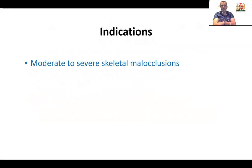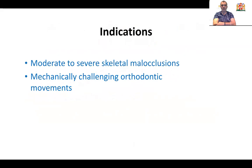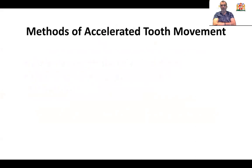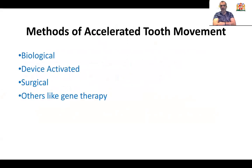What are the indications for acceleration of tooth movements? It's mainly indicated to treat moderate to severe skeletal malocclusion, and also to treat mechanically challenged orthodontic movements, in particular intrusion or closure of previously extracted teeth with atrophied bone. There are several methods to accelerate tooth movements, and simply they can be classified into biological, device-activated, surgical, and others such as gene therapy.